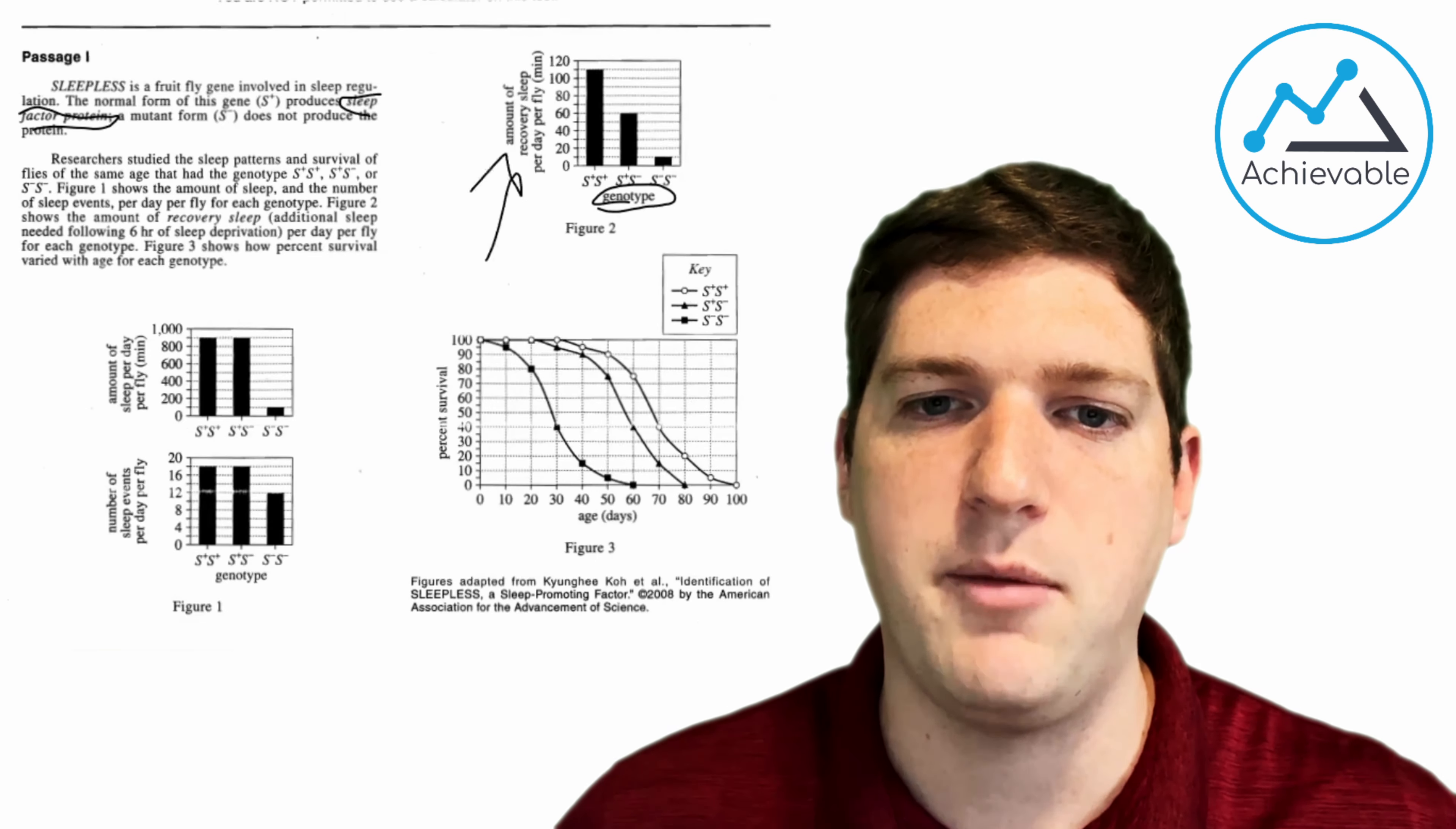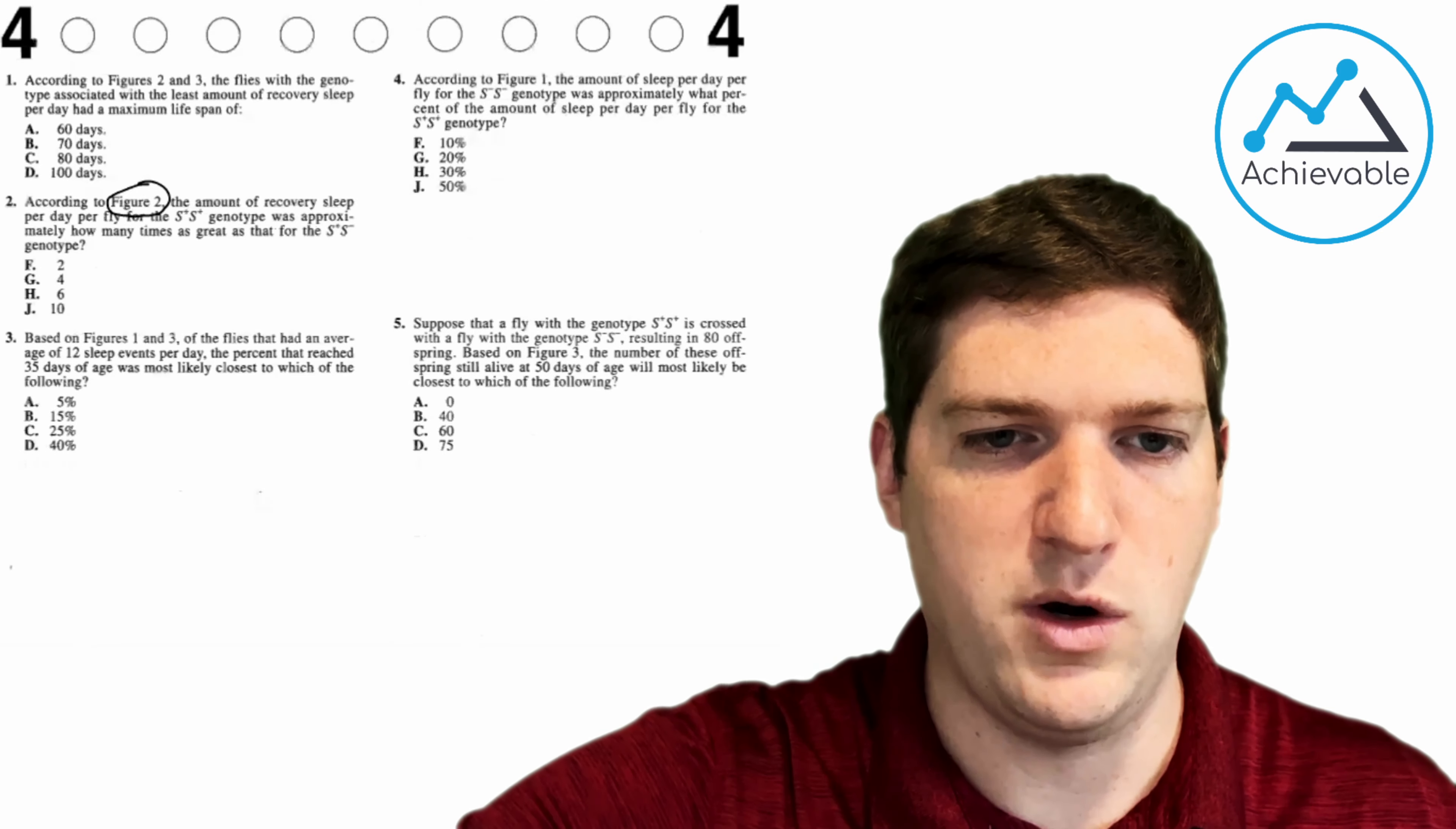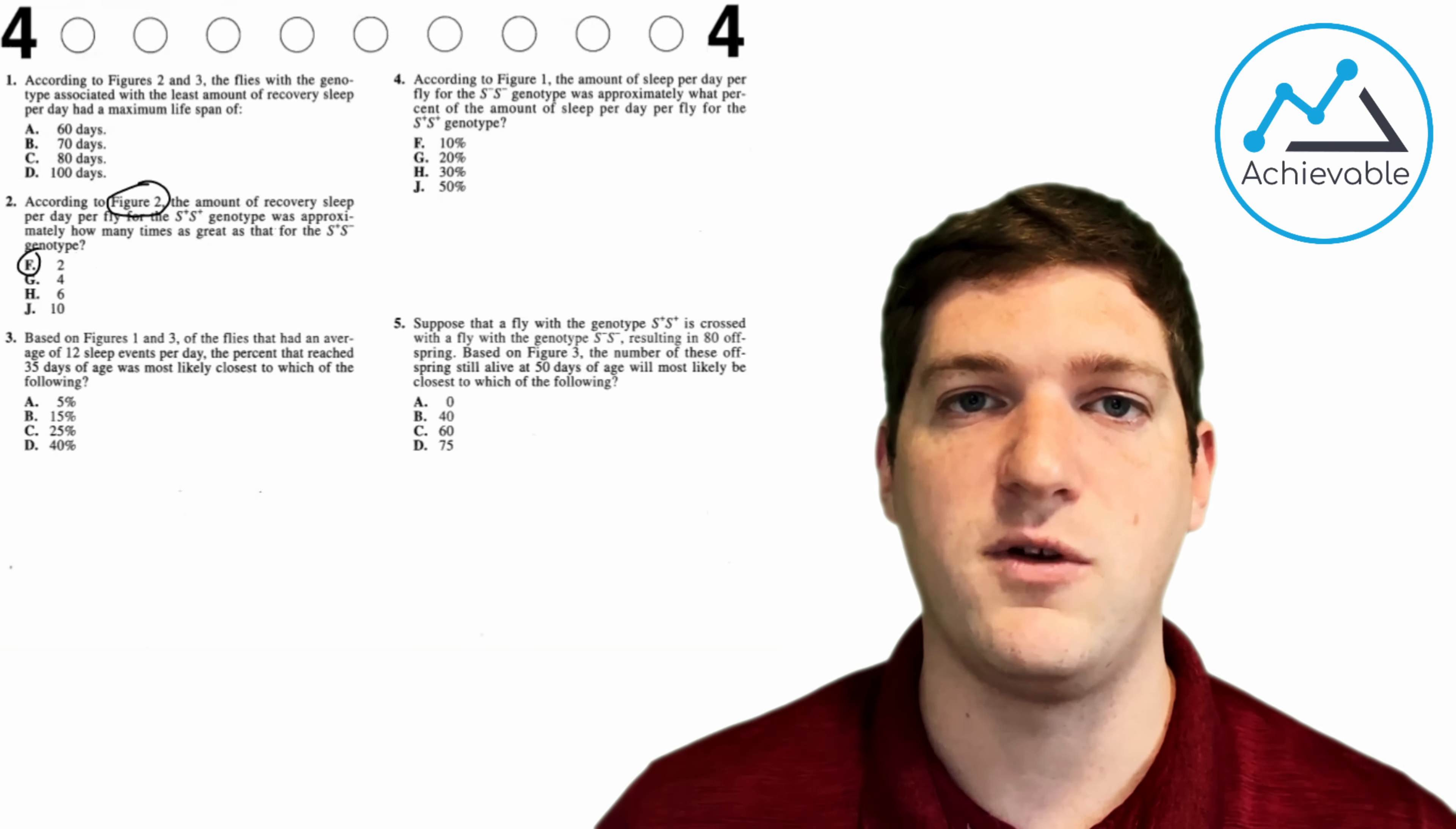Amount of recovery sleep per fly per day. That's what it asked about in the question. That's on my y-axis. So now I know that I'm looking at this genotype here, S plus S minus, and S plus S plus. And I'm supposed to compare their y-axis values. I can see that the S plus S minus bar is about half the size of the S plus S plus bar. So I'm going to go down here, reread the end of my question. For the S plus S plus genotype was approximately how many times as great as that for the S plus S minus genotype? About two. It was double the size. So I can circle F and move on about my life. That was pretty quick. Didn't have to read. Didn't have to understand what a genotype is. I'm just moving through things. And a lot of times, this is the case for the data representation passages.